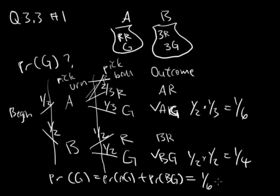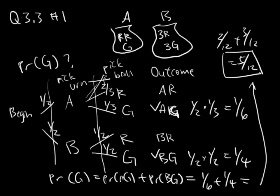We have one-sixth plus one-fourth. We find the common denominator, which is twelve. Here we have two-twelfths plus three-twelfths, which is five-twelfths. And that's our final answer.